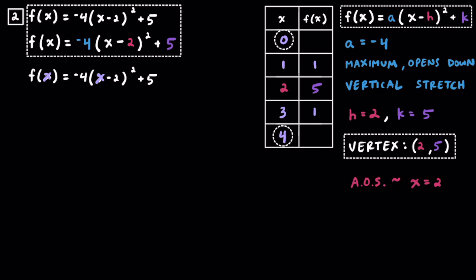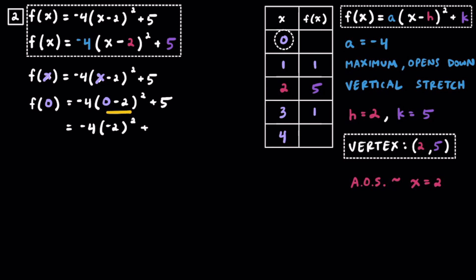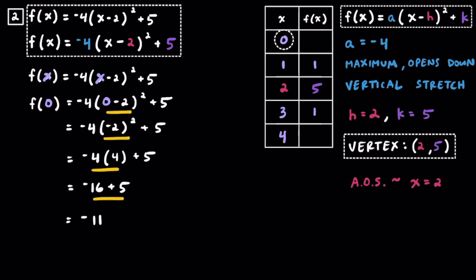Now let's compute for x equals 0. Substituting 0 in: 0 minus 2 is negative 2, so we have negative 4 times negative 2 squared plus 5. Negative 2 squared is positive 4, so we have negative 4 times positive 4 plus 5. Negative 4 times positive 4 is negative 16, and negative 16 plus 5 equals negative 11. So when x is 0, f of x equals negative 11, and by symmetry the same is true when x equals 4. We can go ahead and fill those into the table.